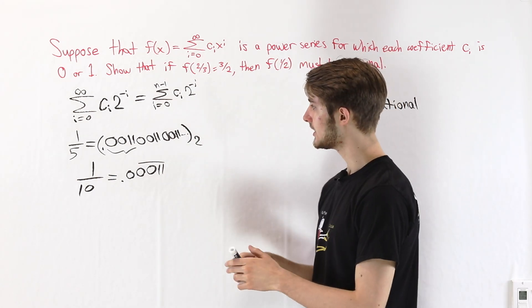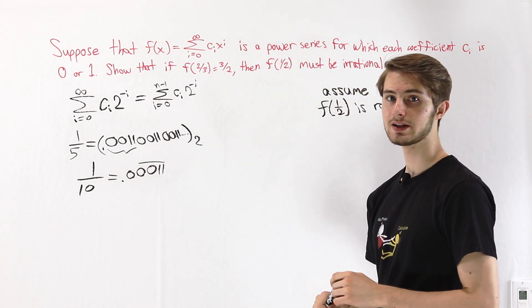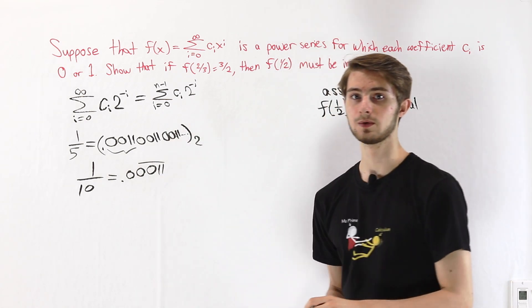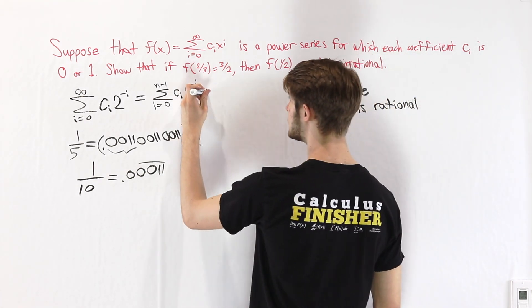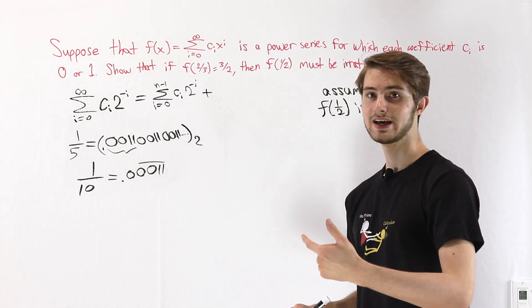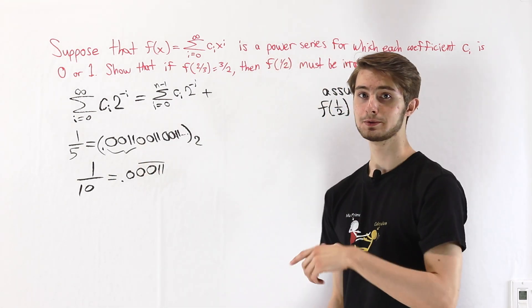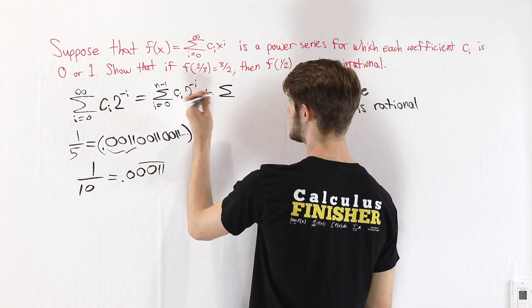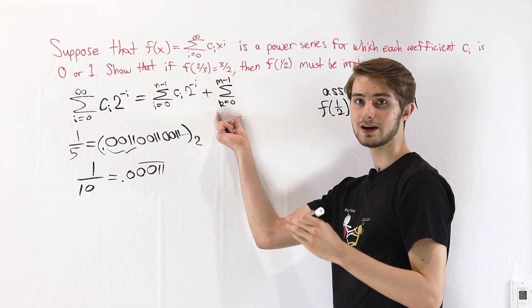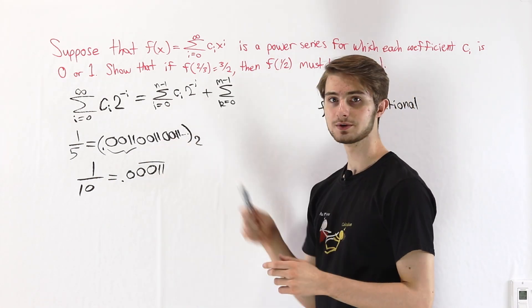We need to think about how we can represent this repeating sequence of digits. Let's say that the sequence has length m — so for 0011, the length is four, meaning m equals 4. We take the sum from k equals 0 to m minus 1, giving us m digits in this sequence. The repeating part starts at position n, so we take c sub (n+k), multiplied by 2 to the negative k, to ensure all digits are in the correct order.